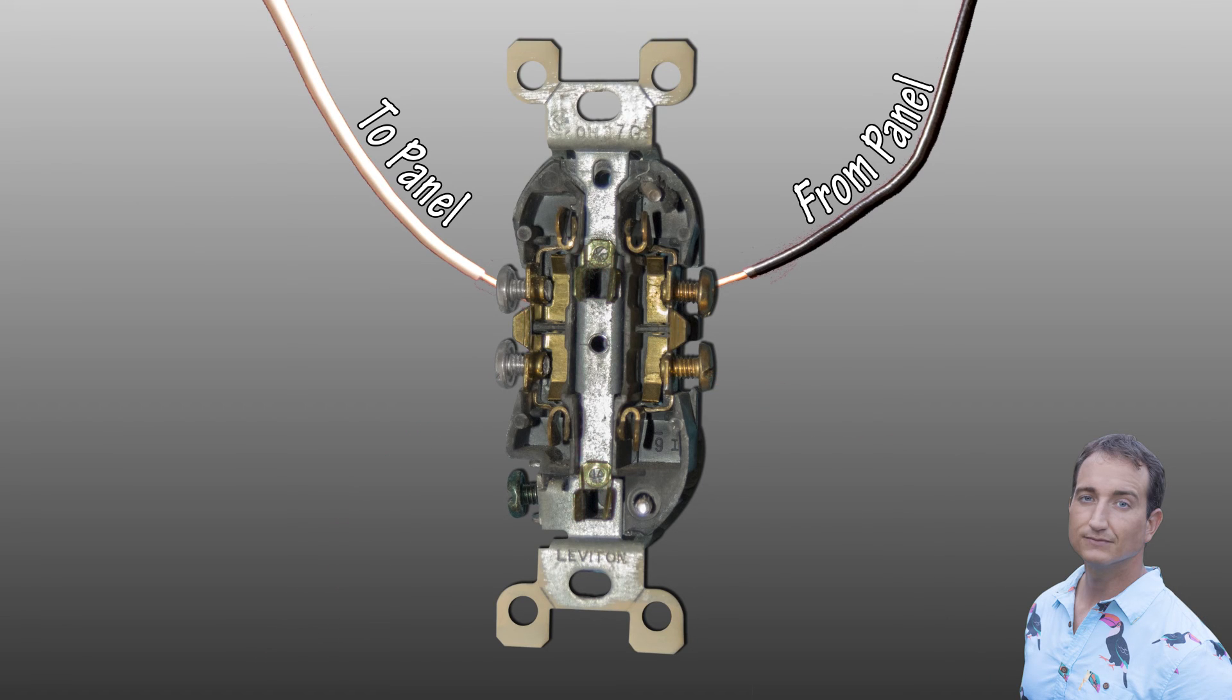The ground prong is a safety feature that is intended to deviate an electrical short through the ground wire back to the house grounding rod.